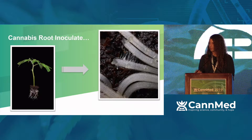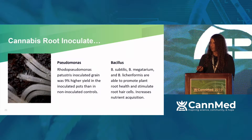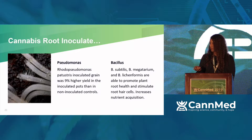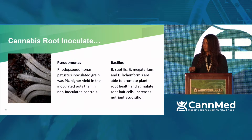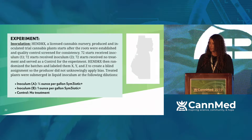So we took one of our clones and introduced a cannabis root inoculant. We had the opportunity to test this product that so many years ago hadn't been tested — let's see if the results can match the potential. We saw a tremendous justification for using pseudomonas and bacillus. Rhodopseudomonas palustris has been inoculated in grain and demonstrated a 9% yield increase — that could be really beneficial to our farmers. Bacillus subtilis, Bacillus megaterium, and Bacillus licheniformis are all able to promote plant root health, stimulate root hairs and cells, and increase nutrient acquisition.